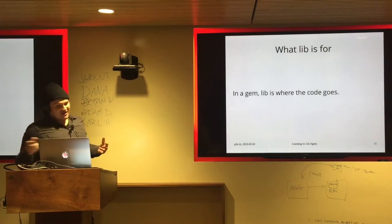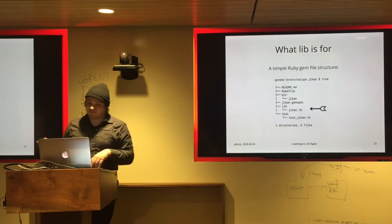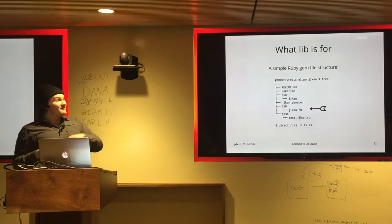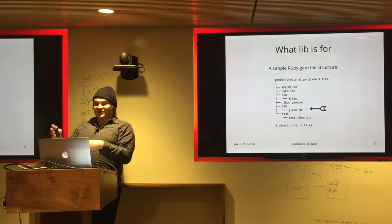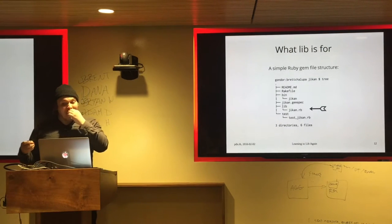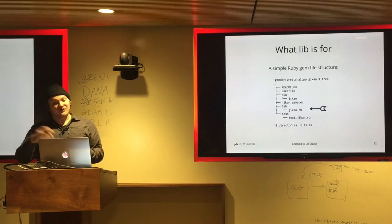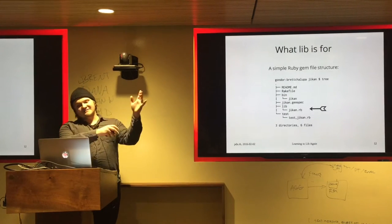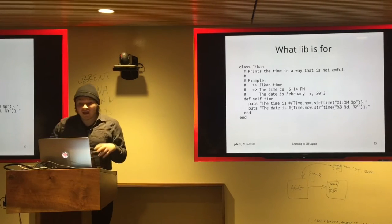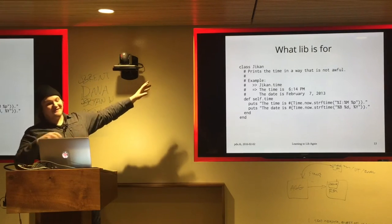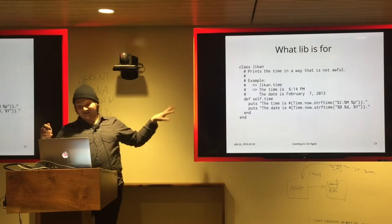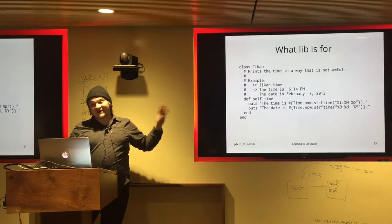Traditionally, if you create a new Ruby gem, you put your code in the lib directory. Here's a really simple gem that prints out the current time — in the lib directory there's just one file. This is traditionally what the lib directory is for in a gem. A gem has some other files, but they're secondary; lib is the place you want to look. This code literally just prints out the time in a human-readable way.